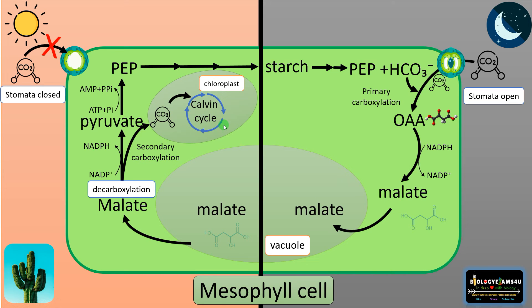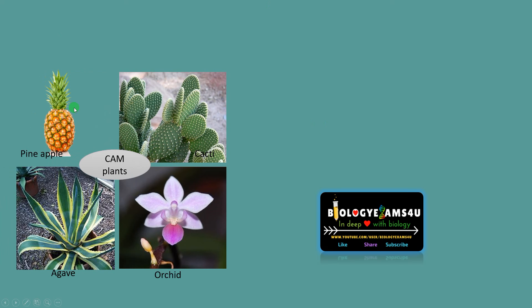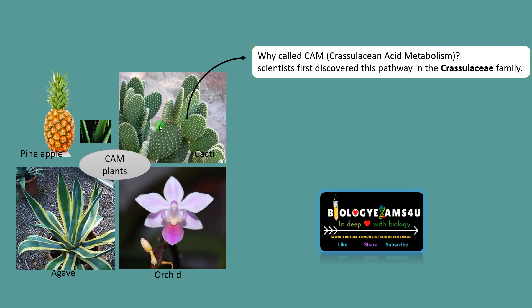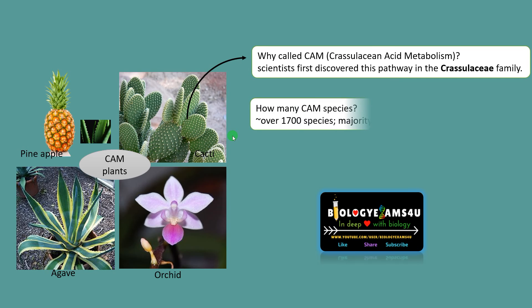Let me share some examples of CAM plants. Common CAM plants include pineapple, cactus, agave, orchid, aloe, etc. They are called CAM plants because scientists first observed this pathway in family members of Crassulaceae. Approximately there are 1,700 CAM species, and the majority are succulents.